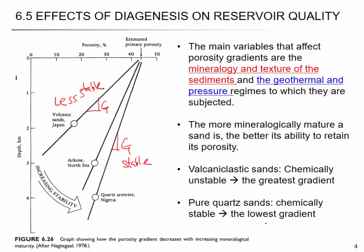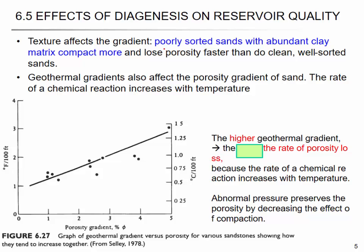Carbonate is very friable and chemically unstable, so it may be more subjected to secondary diagenetic porosity change. For example, volcaniclastic sand is chemically unstable, so you have a higher gradient. Pure quartz sand is stable, giving the lowest gradient. Texture also affects the gradient. If you have poorly sorted sand — which means well-graded sand with small and large particles together — you can compact more and lose porosity faster than clean, well-sorted sand.